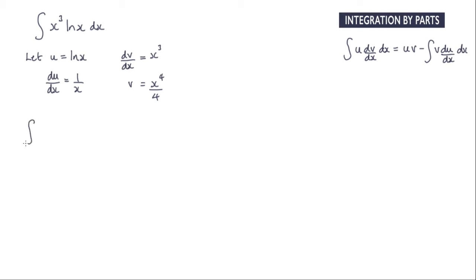So now what we have is the integral of x cubed log x dx is equal to u multiplied by v. So we get x to the power of 4 over 4 log x.